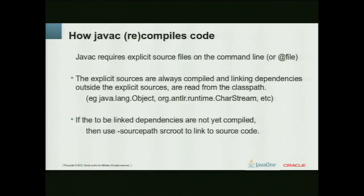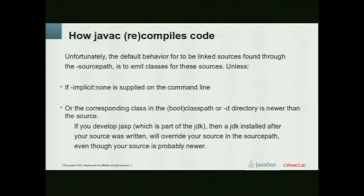How many of you have ever used the minus source path? You use source path to pick up code that you are dependent upon but for some reason have not been able to compile yet. Unfortunately, the default behavior for source path is to actually generate code that JavaC accidentally finds there while it's linking your code. So even though you didn't explicitly say that this class should be written to disk, it will do so for you — unless, of course, you specify implicit none, and then it will not write unexpected classes to disk.